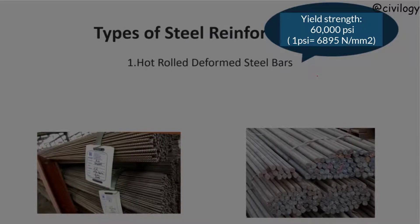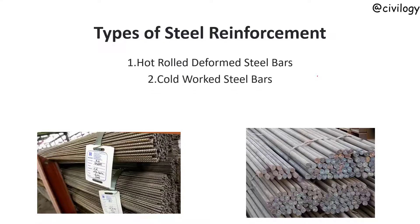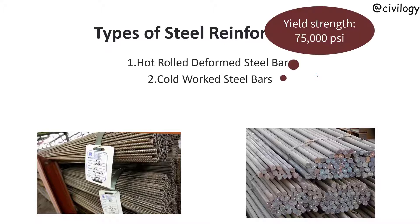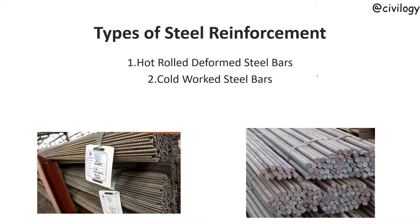Next, cold worked steel bars. A cold worked reinforcement bar is obtained by letting the hot rolled steel bars undergo cold working. In the cold working process, the bars undergo twisting, and the process is performed at room temperature. Cold worked steel bars do not undergo plastic yield, and thus have less ductility compared to hot rolled bars.